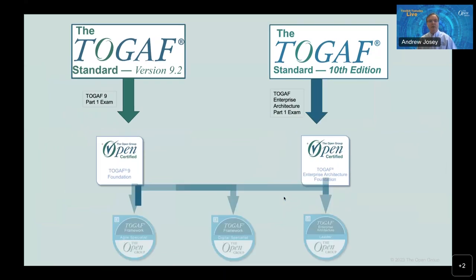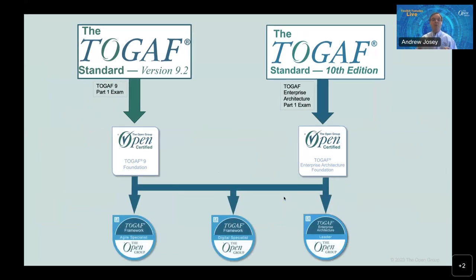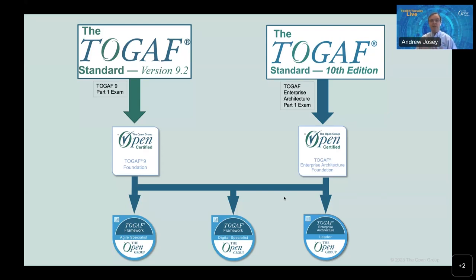There are also specialist paths, or certification credentials — smaller chunks of learning. We have introduced agile specialist, digital specialist, and enterprise architecture leader credentials. There is a prerequisite, which is what we call TOGAF Foundation and up — that can be TOGAF 9 Foundation or the new TOGAF EA Foundation. So we've introduced learning paths for individuals who are currently TOGAF 9 certified, and they can choose to take on these new learning paths from there.